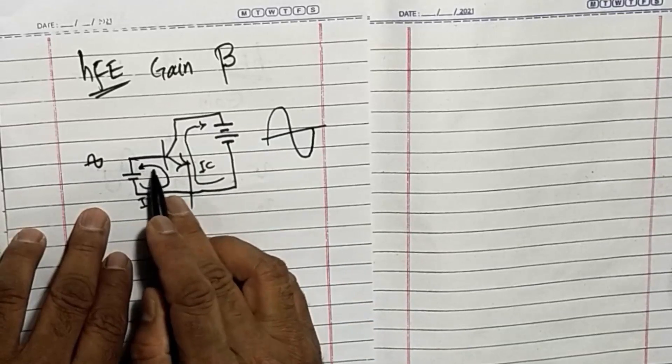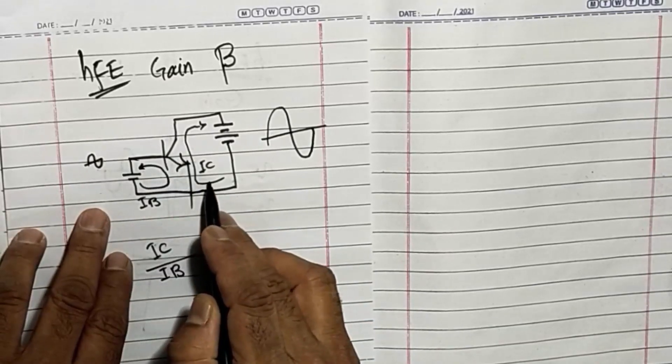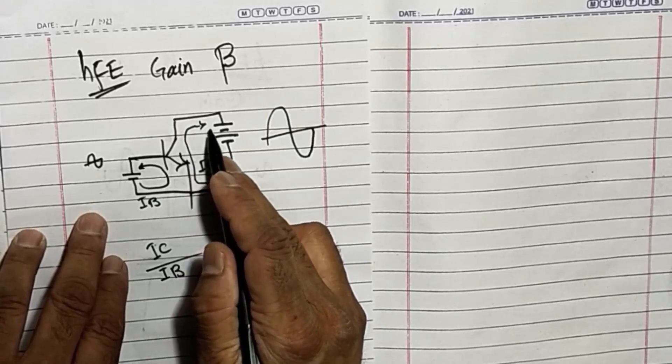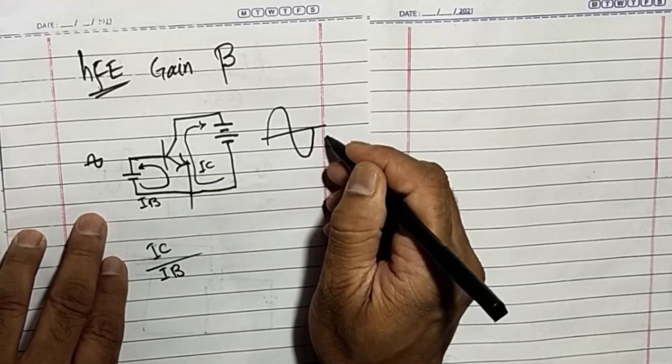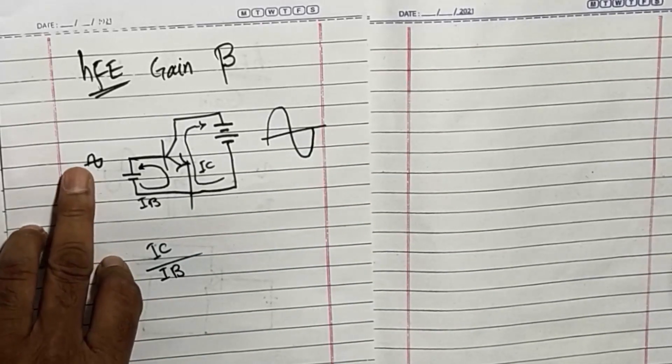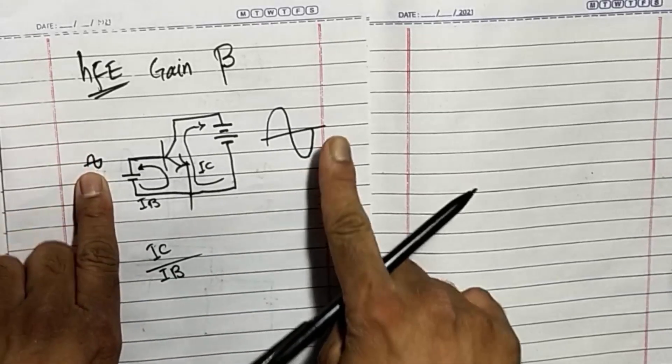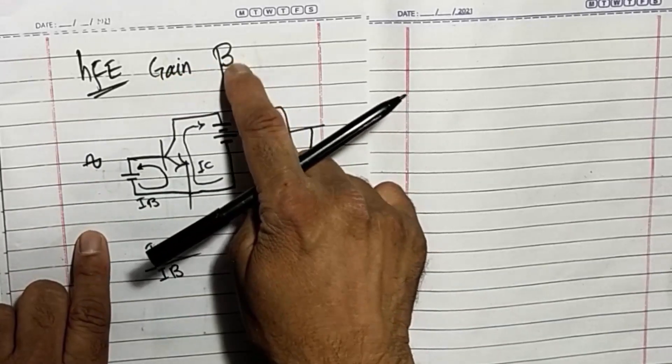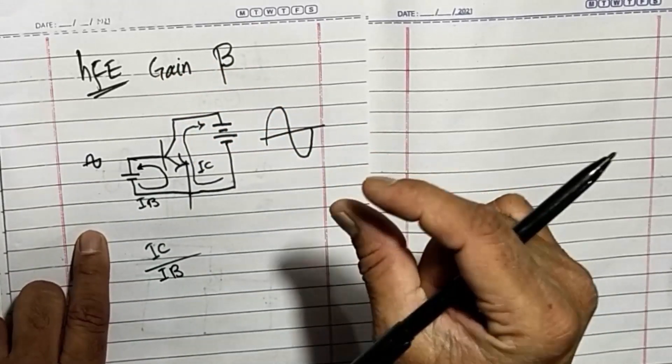And this 1 milliampere will cause the current to increase, to amplify the current in the collector current up to 100 milliamperes. So this ratio, 1 and 100, is called gain, is called beta, is called amplification factor.